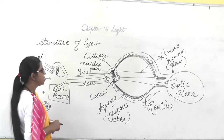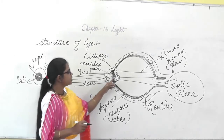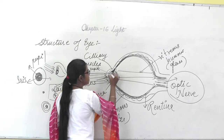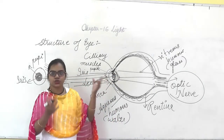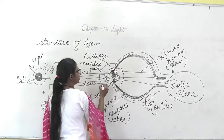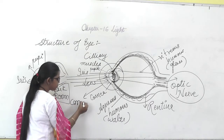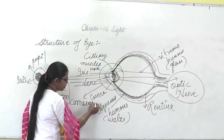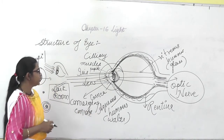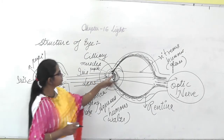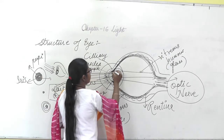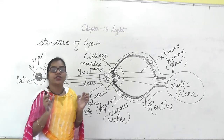This is the structure of the eye. You can see the lens here, which allows the image to focus. The overall structure behaves like a converging convex lens. These are the ciliary muscles, which hold the lens and help in forming the image.